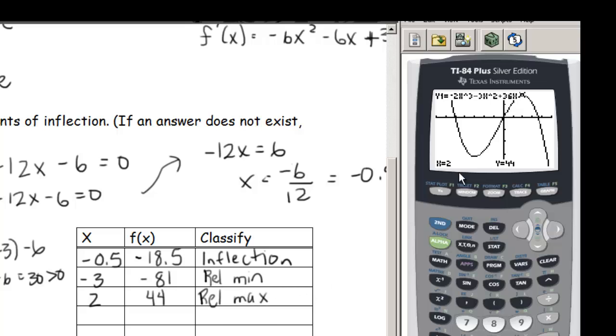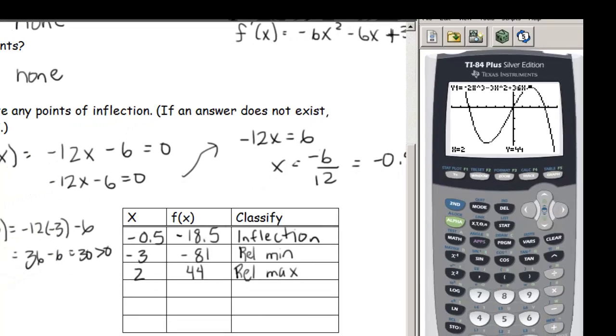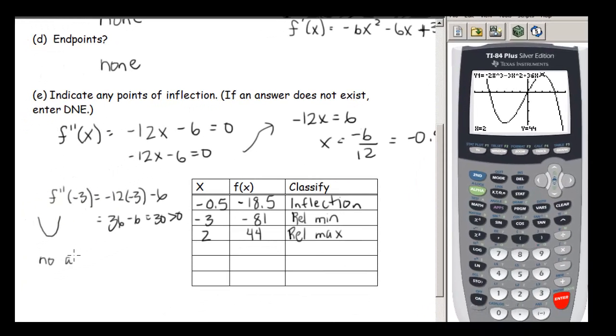And then (2, 44), that puts us up here, and so that is a relative max. Now notice that since our domain is not restricted, our function goes up forever this way, and it goes down forever this way. So for this function, there's no absolute max or min.